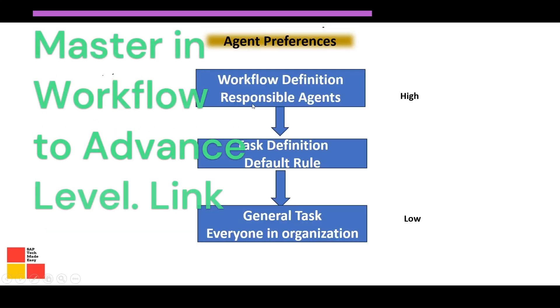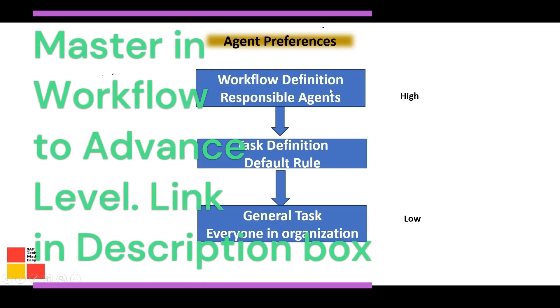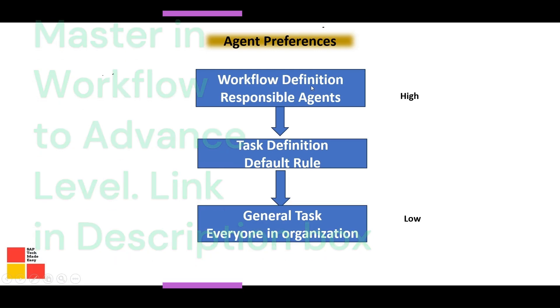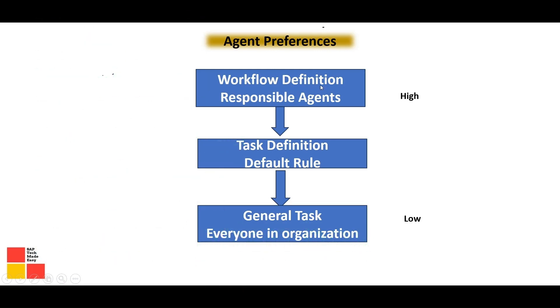It is always good to define the agent at the workflow definition level. If not there, define the agent at the task level under the default rule. The precedence is: agents defined at the workflow definition level are considered first, then the default rule agent at the task definition level, and finally if marked as a general task, everyone in the organization receives the work item.